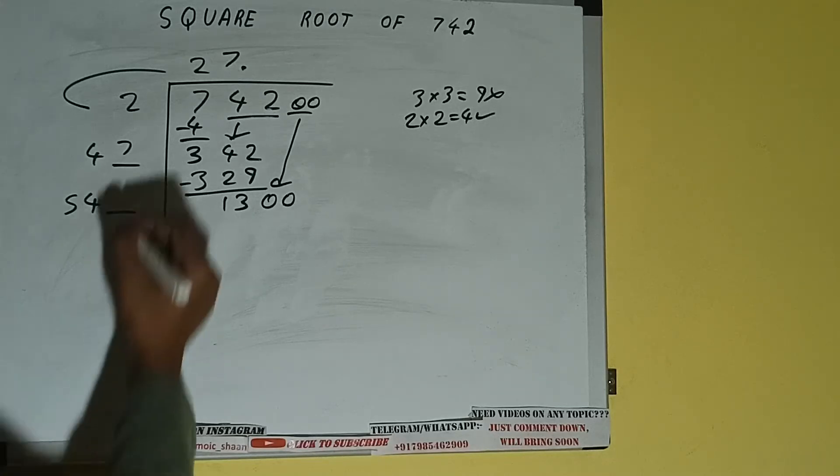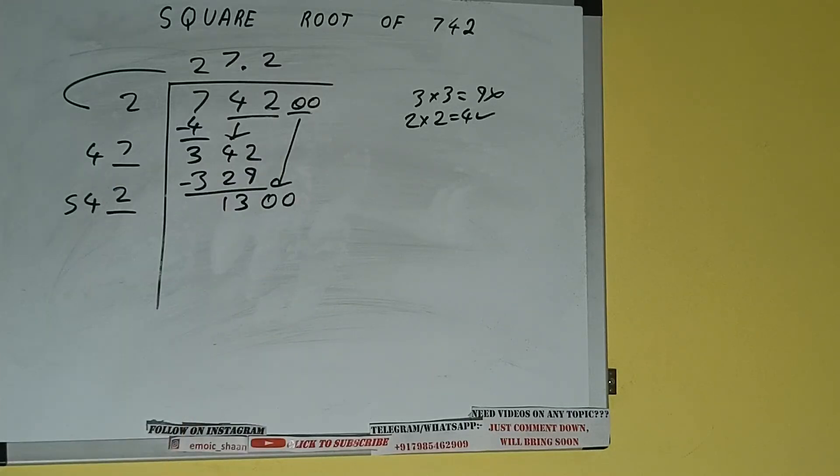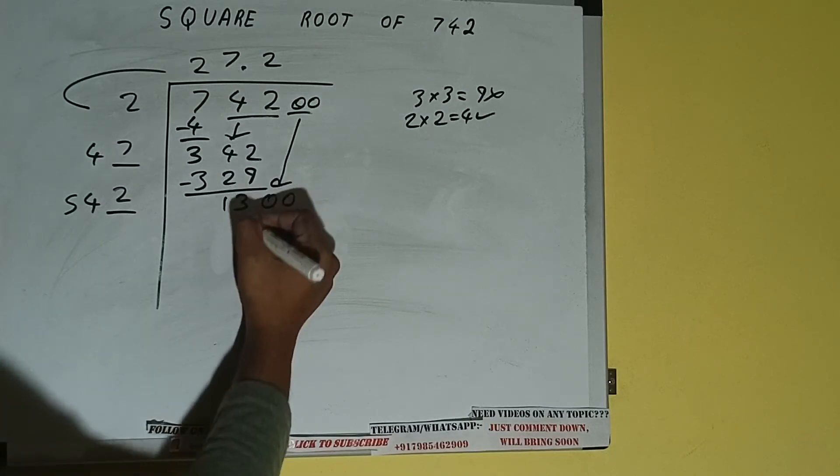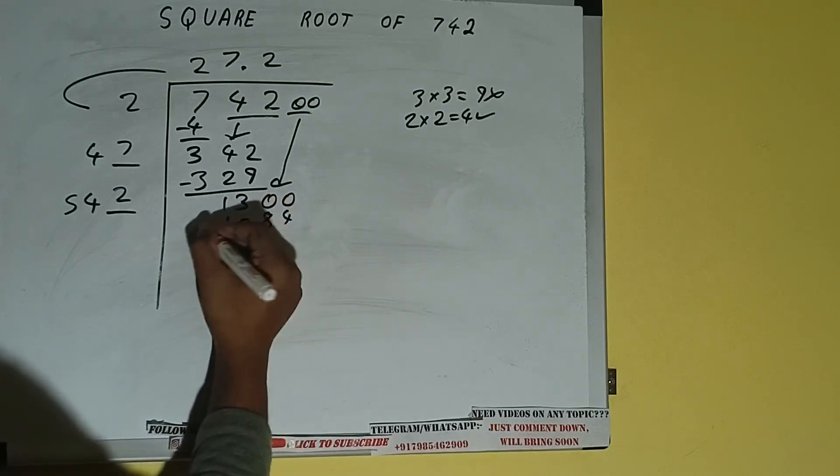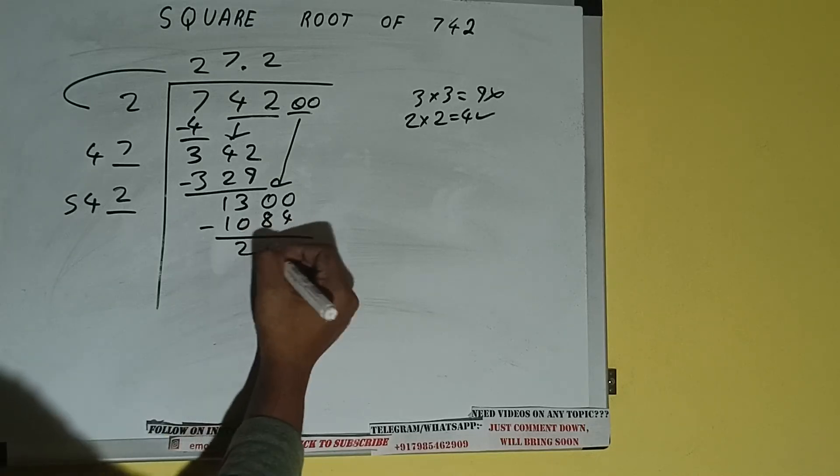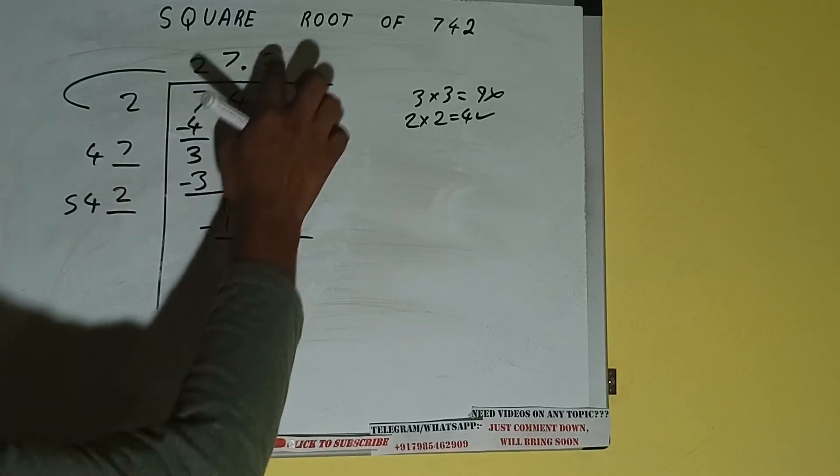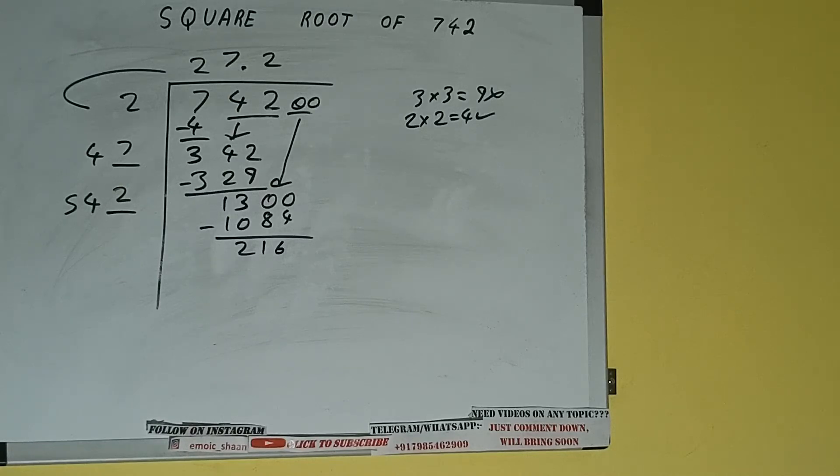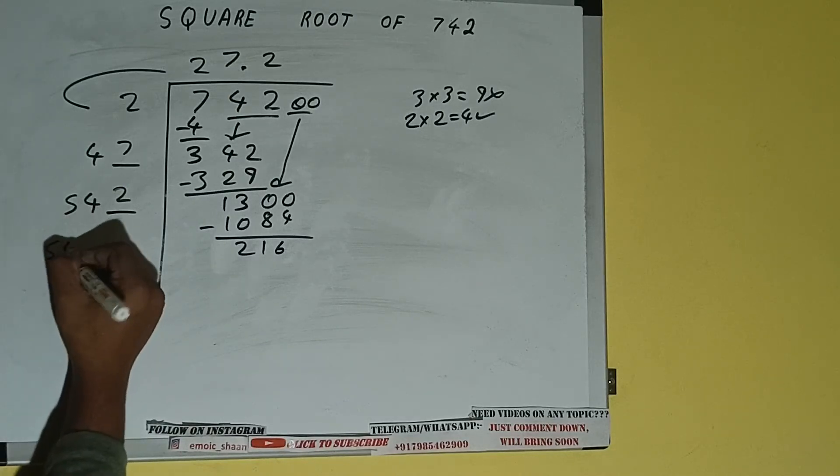Now we can try two times, two here and two here, and 1084 subtract. And we'll be having 216. Now 542 into 2 we did, so add both. So 542 plus 2 will be 544 and one digit extra.